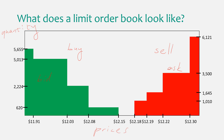Let's interpret one of these bars. If you focus here, we have a price of 12.18 and there are 1010 shares offered at that price. So this is a limit ask order. As you can see, we also have a gap in the middle.